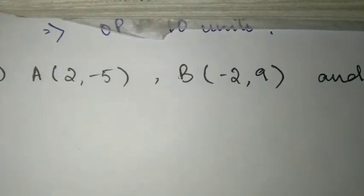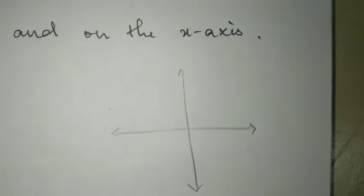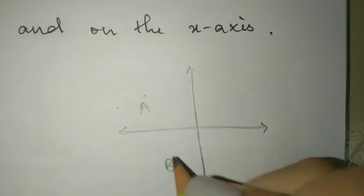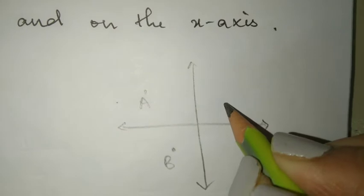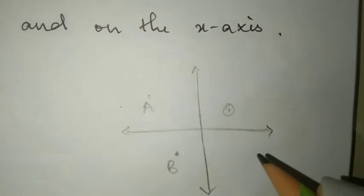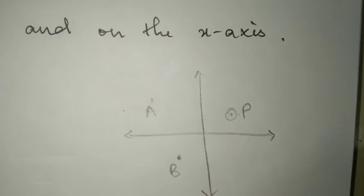If you have a point on the x-axis which is equidistant from A(2, -5) and B(-2, 9), it's going to be point A, point B, and the equidistant point. When you have that, the first thing which you have to write down is the points which are given.